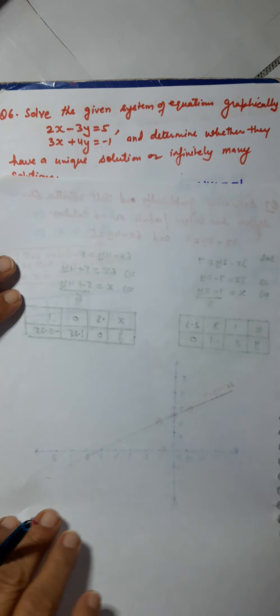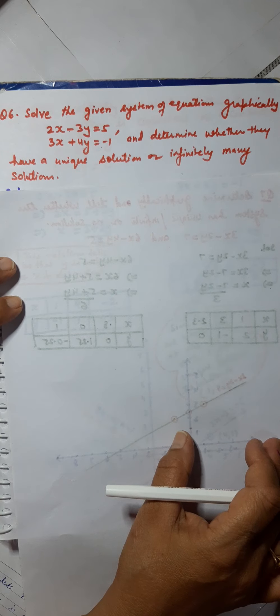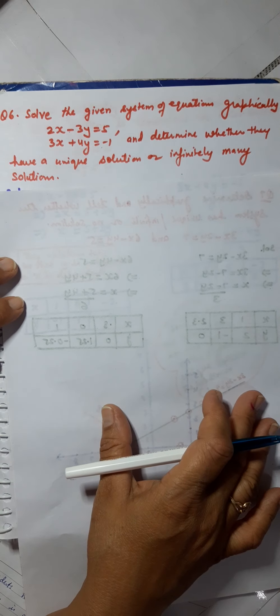The first question that I picked up is solve the given system of equations graphically: 2x minus 3y equals 5, 3x plus 4y equals minus 1. And determine whether they have a unique solution or infinitely many solutions.